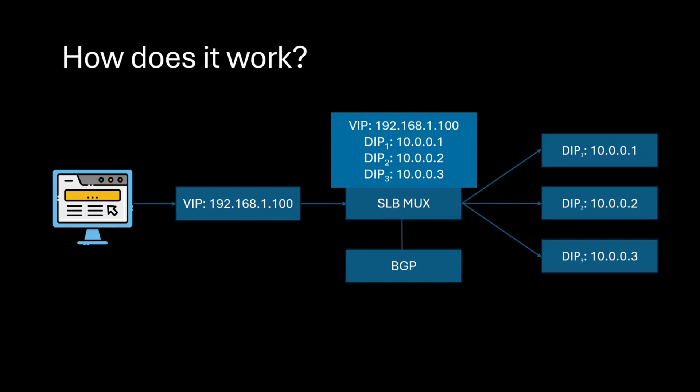So let's say you send your packet to a VIP, which let's assume is 192.168.1.100. The packet will arrive at something called an SLB MUX. Whenever you configure load balancing, your MUX is getting those policies. The MUX is the load balancing VM and it uses a load balancing algorithm to send the packet to one of the backend VMs, which are your DIPs. The MUX also keeps checking the health of each of the DIPs, and if a VM is not responding it will mark it as unhealthy and will not send any packets to that VM until it's marked healthy again, ensuring that a packet is never dropped.